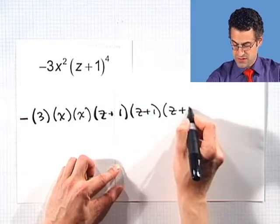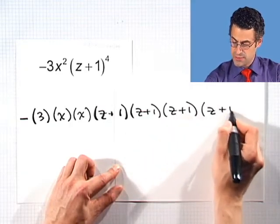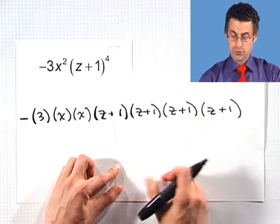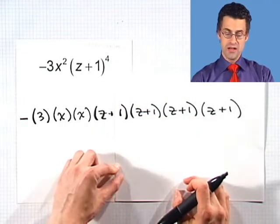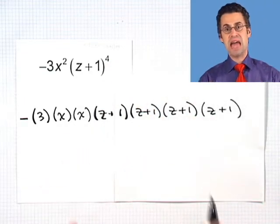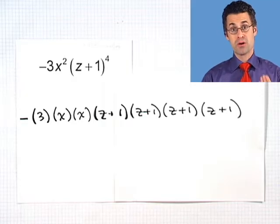z plus 1, not twice. z plus 1, not 3 times, but z plus 1 multiplied by itself 4 times because the exponent is 4. So that's how you can expand things out and that is what an exponent means.